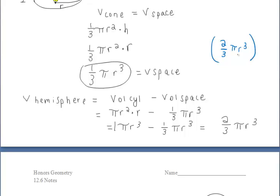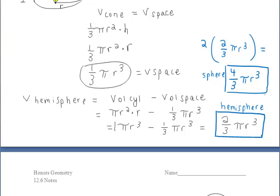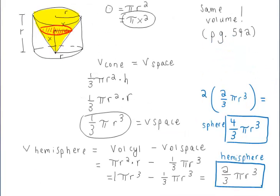Since we want the volume of a full sphere, we just double that. So the volume of any sphere is (4/3)πr³, and the volume of any hemisphere is (2/3)πr³. We'll pick back up with the second part of the notes in just a moment to do some further example problems.